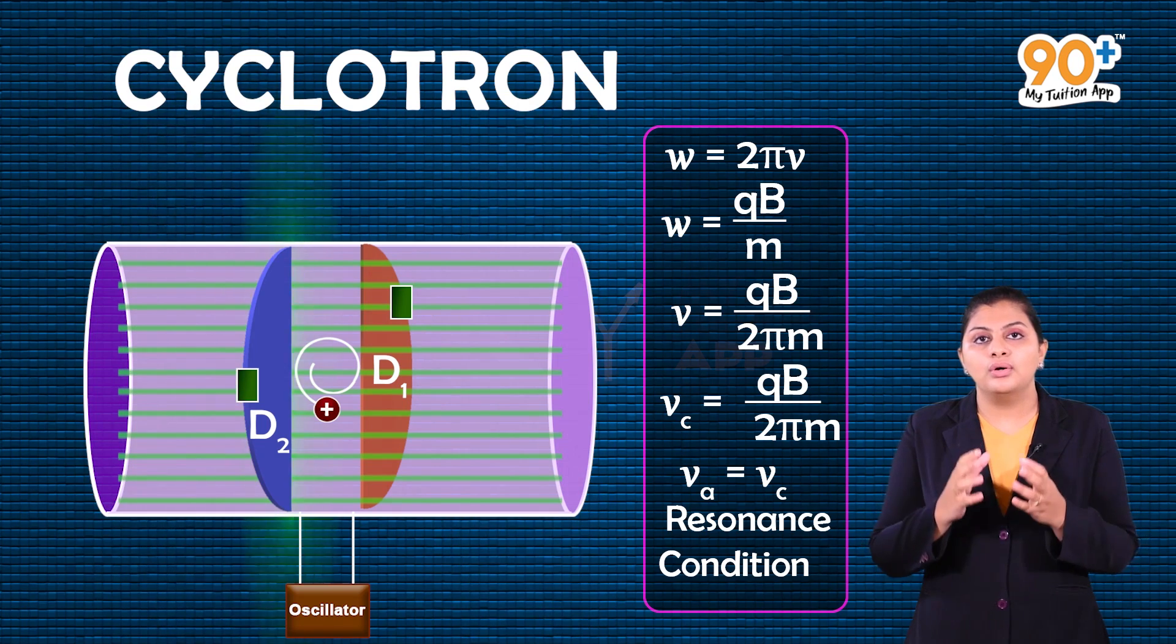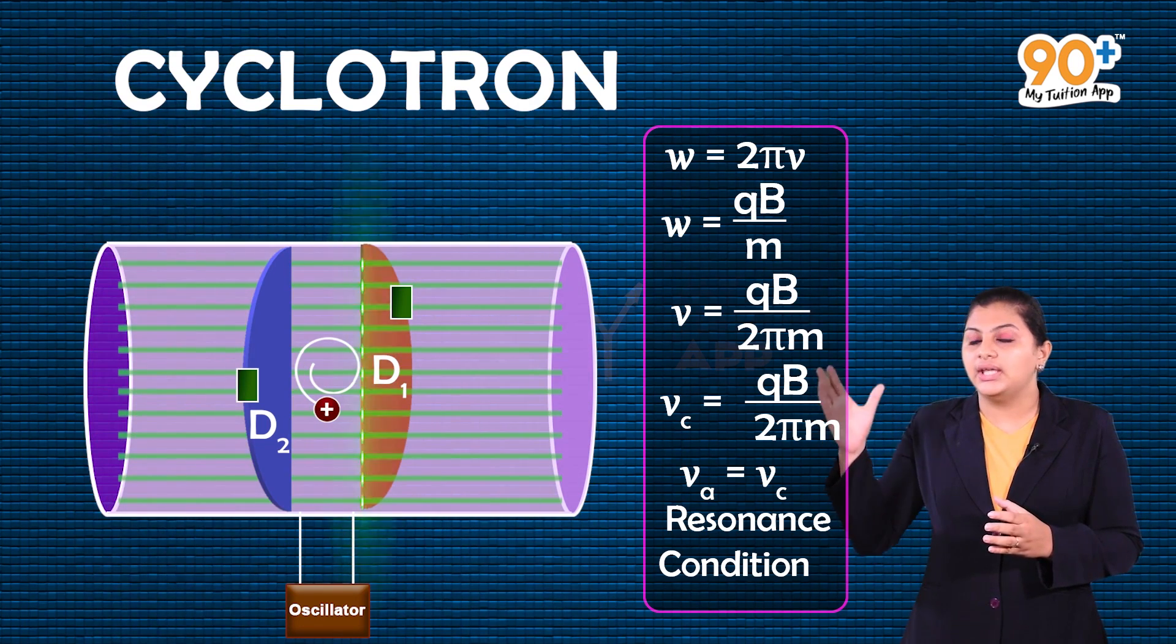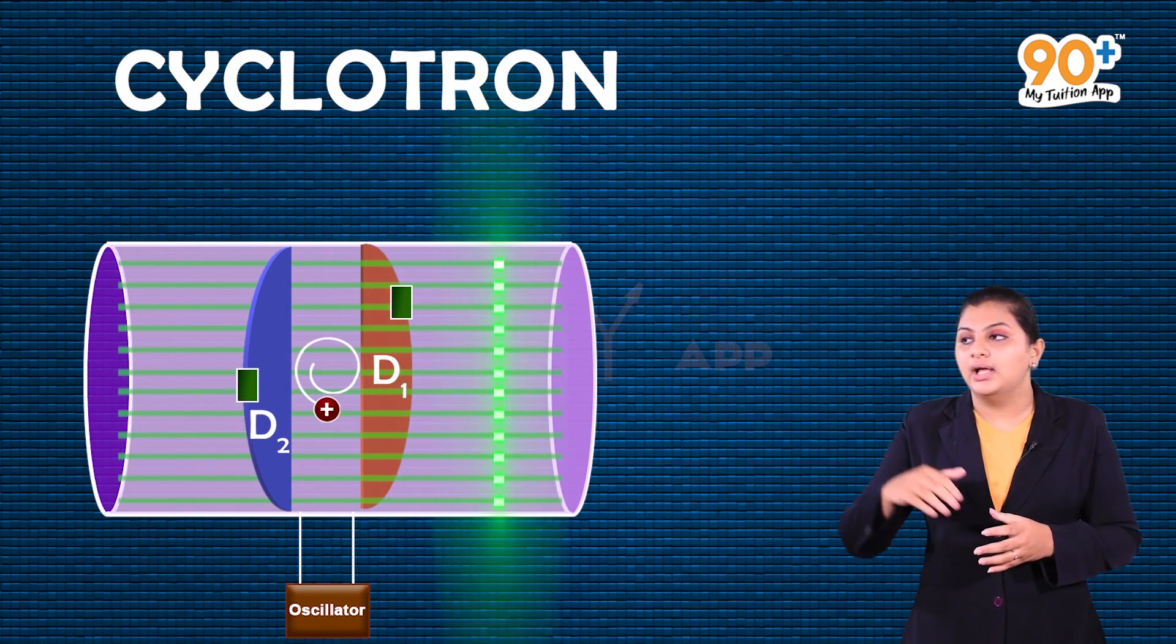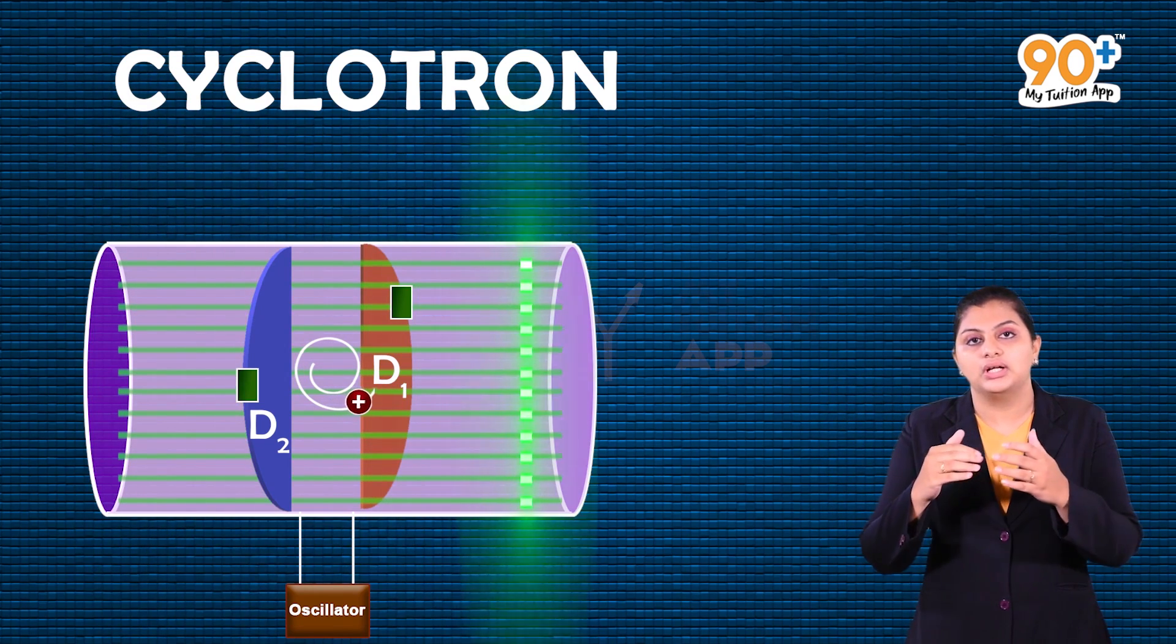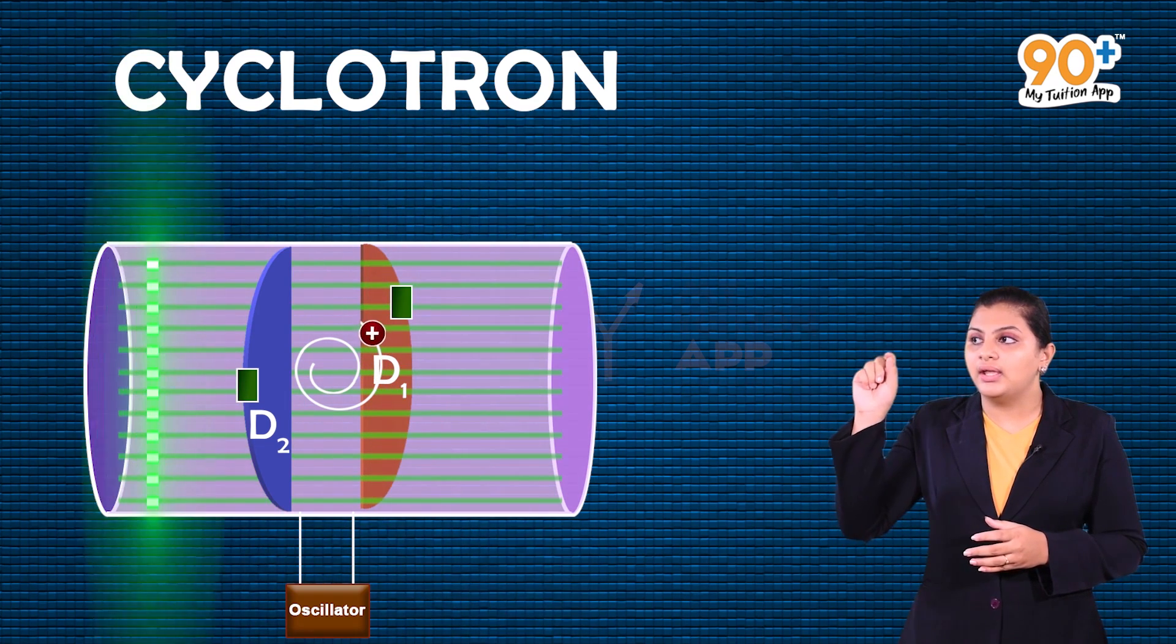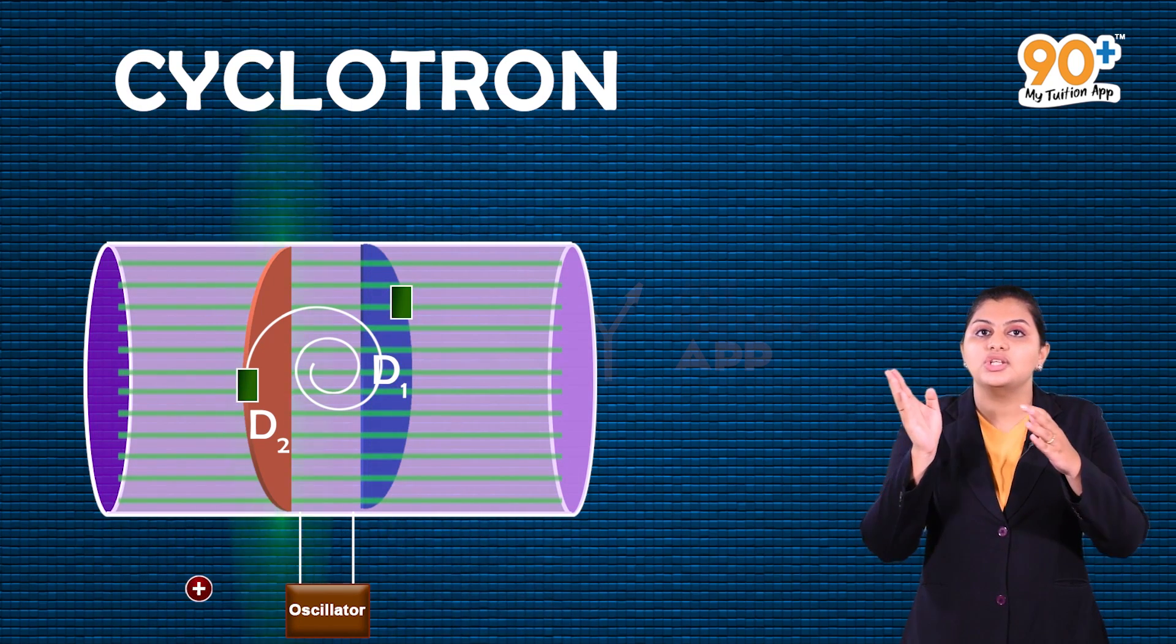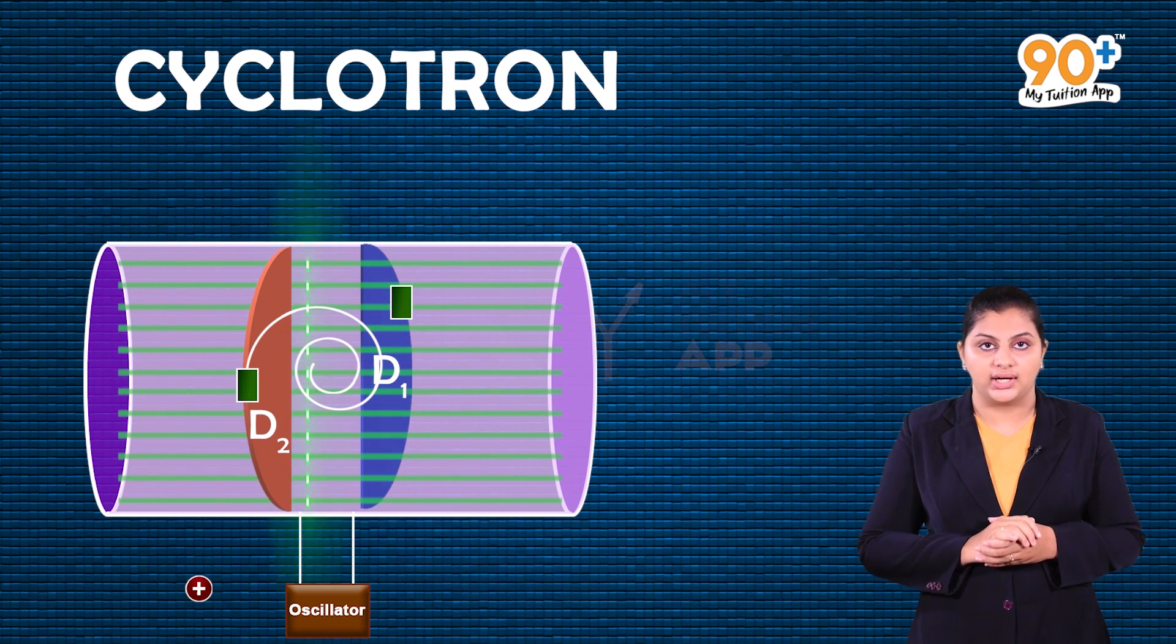Each time the particle moves from one D to the other D, kinetic energy qV increases. The particle is accelerated and circular motion continues. When the radius approximately equals the chamber radius, it hits the deflection plate and exits through the portal. If this process continues, we obtain a beam of high-energy charged particles.